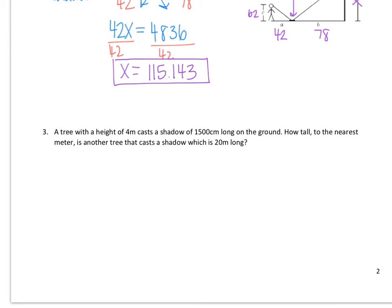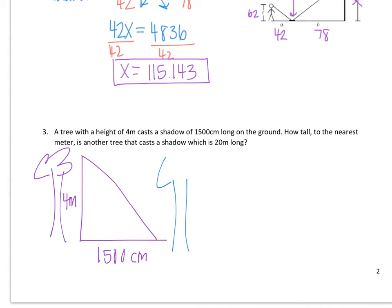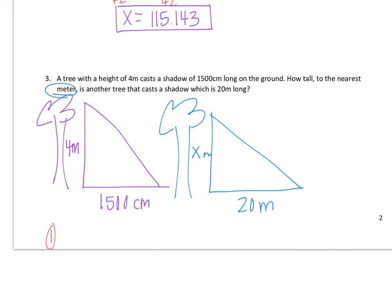We've got a tree that has a height of 4 meters and casts a shadow of 1,500 centimeters long on the ground. Then we have another tree that's casting a shadow of 20 meters long. And we're looking for the height to the nearest meter. Notice it says to the nearest meter, which means that any other units we have here need to be converted. So in this case, the 1,500 needs to be converted. Convert to meters. And if you're wondering how I chose meters, the question says how tall to the nearest meter is another tree.